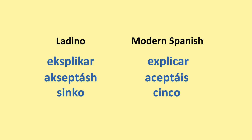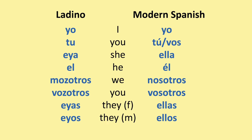Pronouns. For Ladino I'm always going to use the standard Ladino accent, since this video is for Ladino. My modern Spanish pronunciation is more from Argentina, so you'll see that it's a bit different. In Ladino: yo (I), tu (you), ella (she), el (he), mozotras/mozotros (we), vozotras/vozotros (you plural), ellas (they feminine), ellos (they masculine).